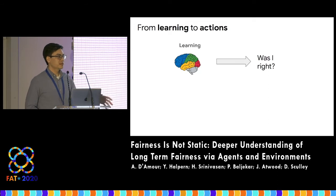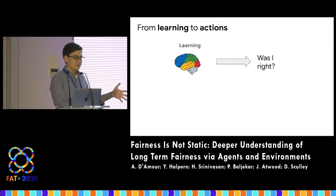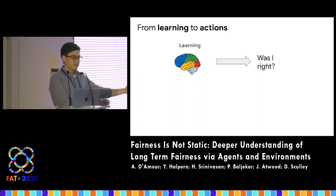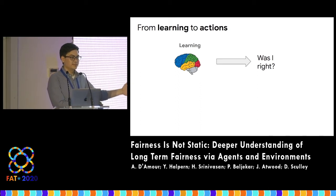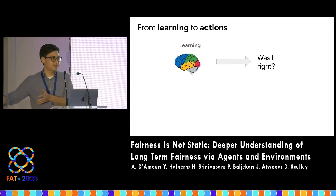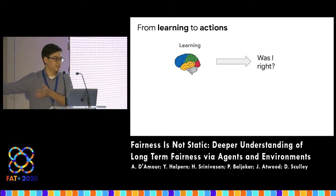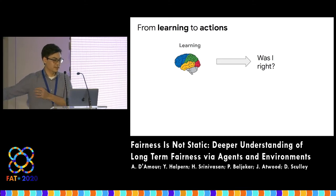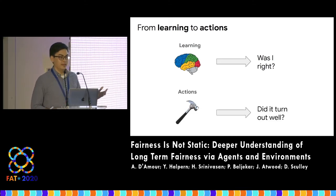A major contribution of the FAccT community over the last several years has been to shift machine learning research agendas from just thinking about learning decision rules from data and asking questions like, was I right, to starting to ask questions about the consequences of taking actions according to those decision rules out in the world — asking questions like, did things turn out well? And for whom?